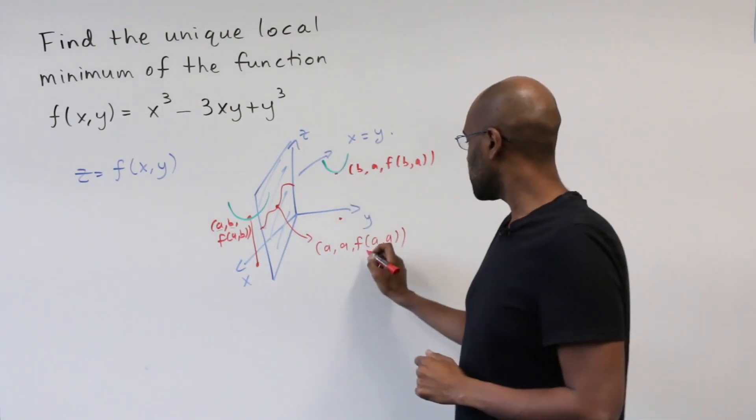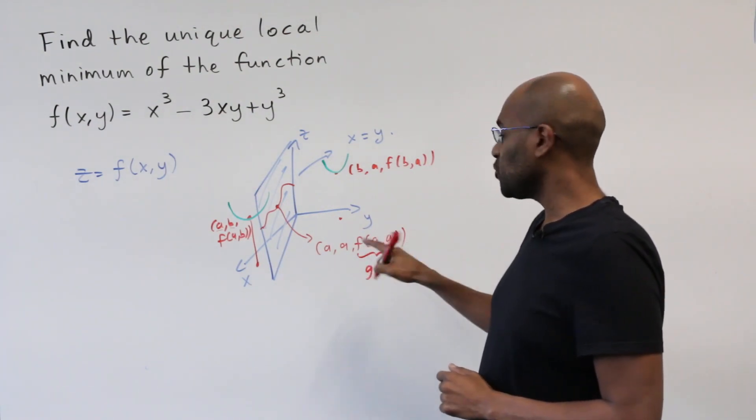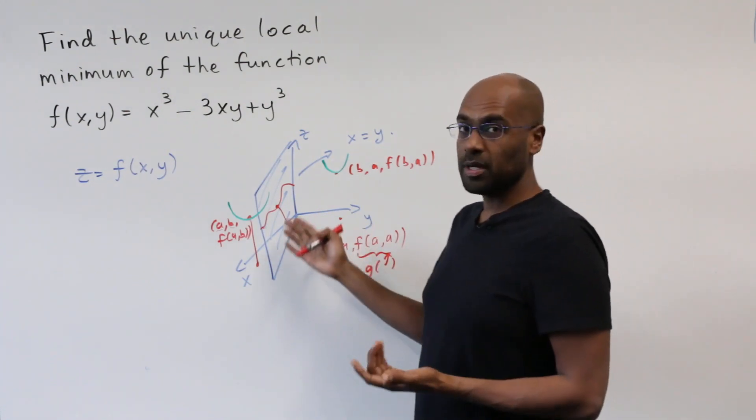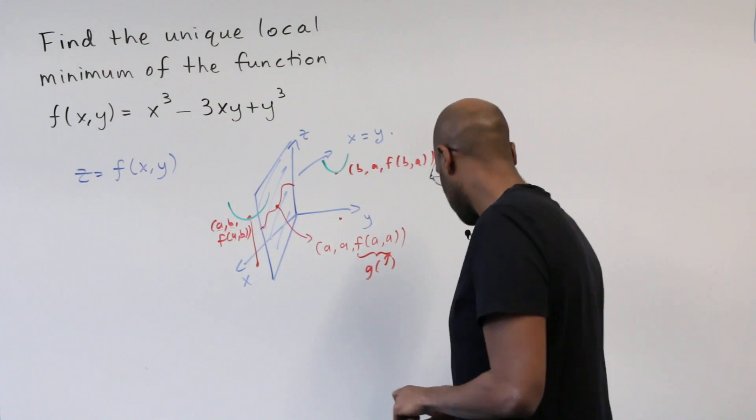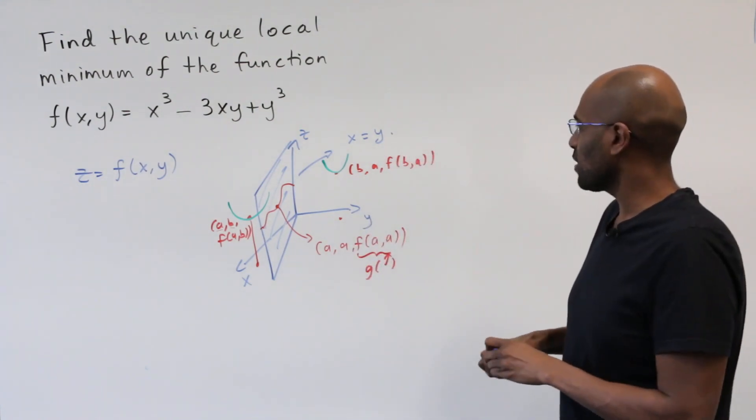To do that, we'll assign a function g for f when the two arguments x and y are the same, and look at local minima for that particular function. So let's go ahead and do that here, and this reduces everything to single variable calculus.